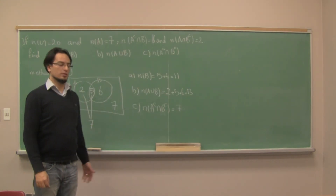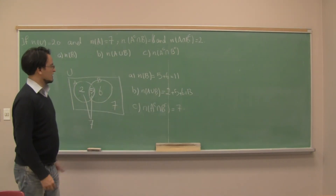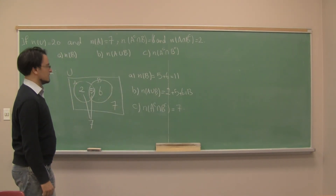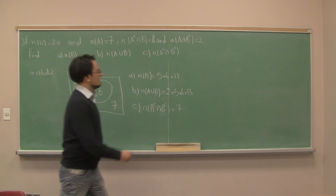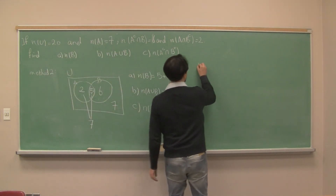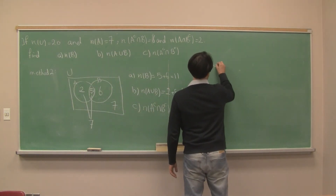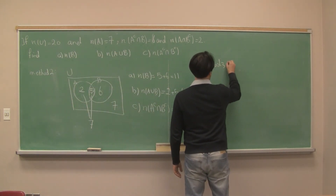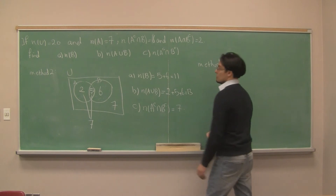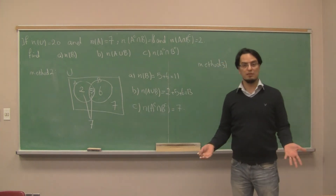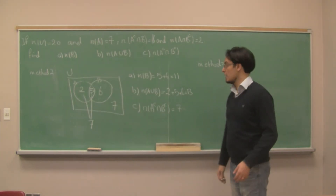Method two using the Venn diagram is a bit easier. Now let's look at method three, the counting tree.